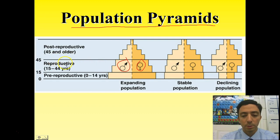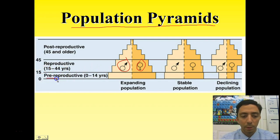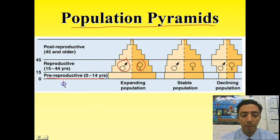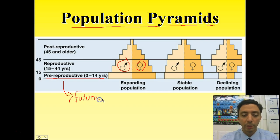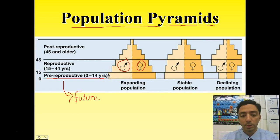Some really good clues to tell you what's happening or what may happen down the road for a population are these different groupings. We've got the pre-reproductive years, zero to 14 along the bottom. These individuals haven't reproduced yet, but they will give you a very good idea on future growth. A population that has a large amount of pre-reproductive individuals — a very wide set of boxes — is a good indication of an expanding population.